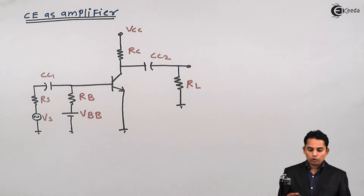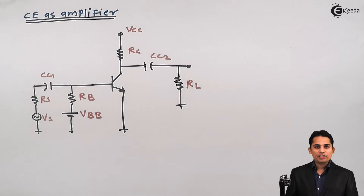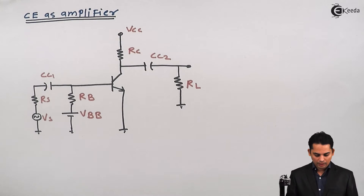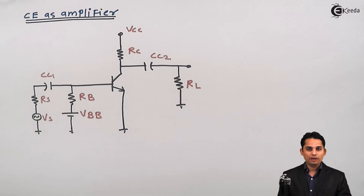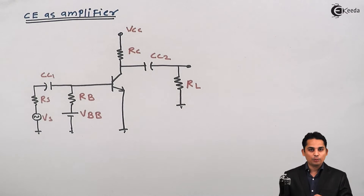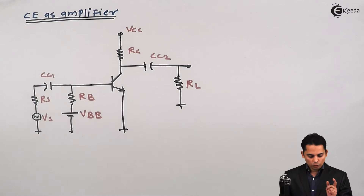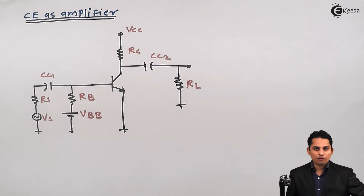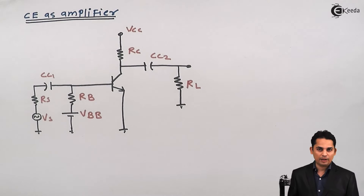Students, today we are going to see what is the need of DC biasing in an amplifier. DC biasing means applying an external battery to a device in order to get a stabilized Q point at the middle of the load line — that is, the center of the load line. To understand why this is needed, we will see the example of a common emitter amplifier.